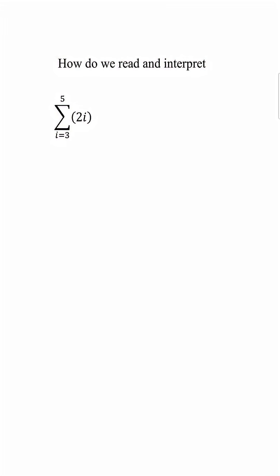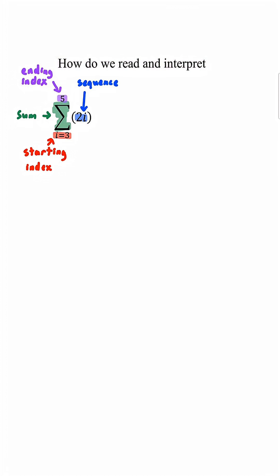How do we read and interpret? Let's look at this green part — this is the sum. Then this red part, i equals 3, that is our starting index. Then we have the purple, which is the 5. This is our ending index. And lastly, this is the 2i. This is our sequence.